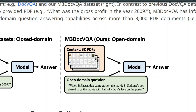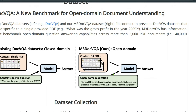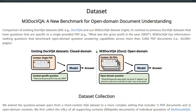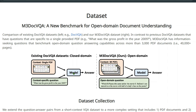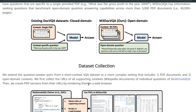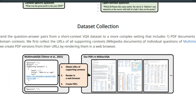In contrast, M3DocVQA has 3,000 PDFs — a very large number — and asks open-domain, complex, multi-hop questions. For example: 'Which biopic title came earlier — the movie Stellan's son starred in?' To answer this, you need to know who Stellan is, who his son is, which movies the son acted in, get the list of those movies, and compare with the movie with half a lady's face on the poster. It's a very detailed, open-ended question requiring understanding across all 3,000 pages.